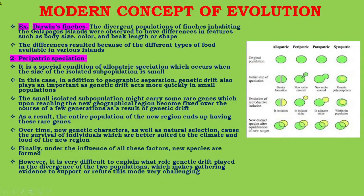This speciation can occur even in cases where the barrier allows some individuals to cross and mate with members of the other group. For a speciation event to be considered allopatric, gene flow between the soon-to-be species must be significantly reduced, but it does not have to be entirely reduced to zero. For example, Darwin's finches: the divergent populations of finches inhabiting the Galapagos Islands were observed to have differences in body size, color, and beak length or shape, resulting from the different types of food available on various islands.